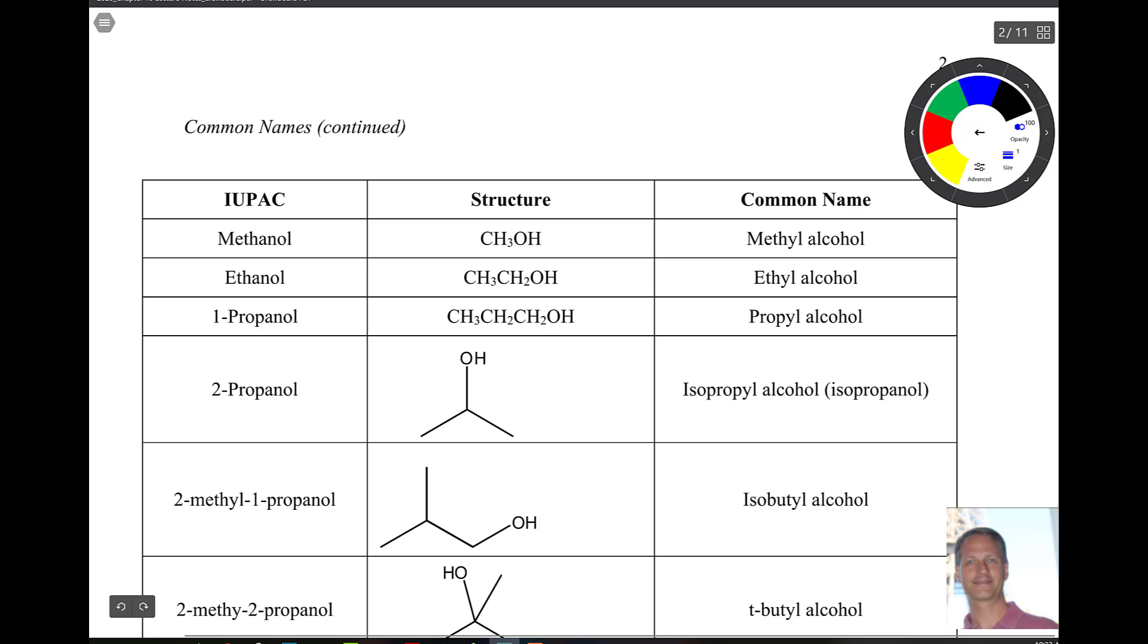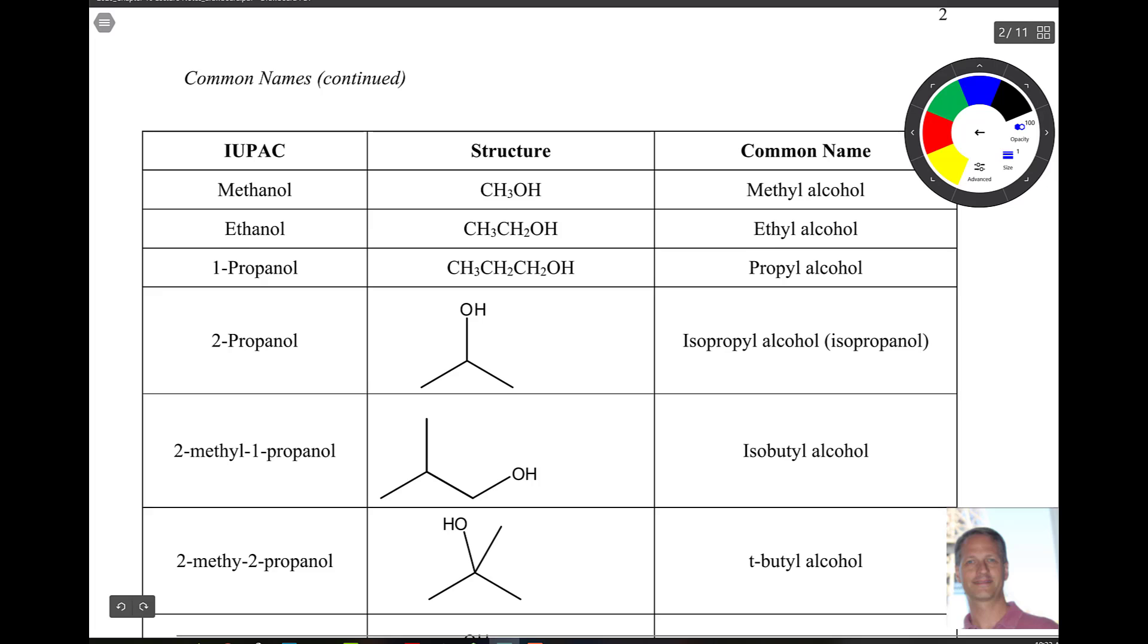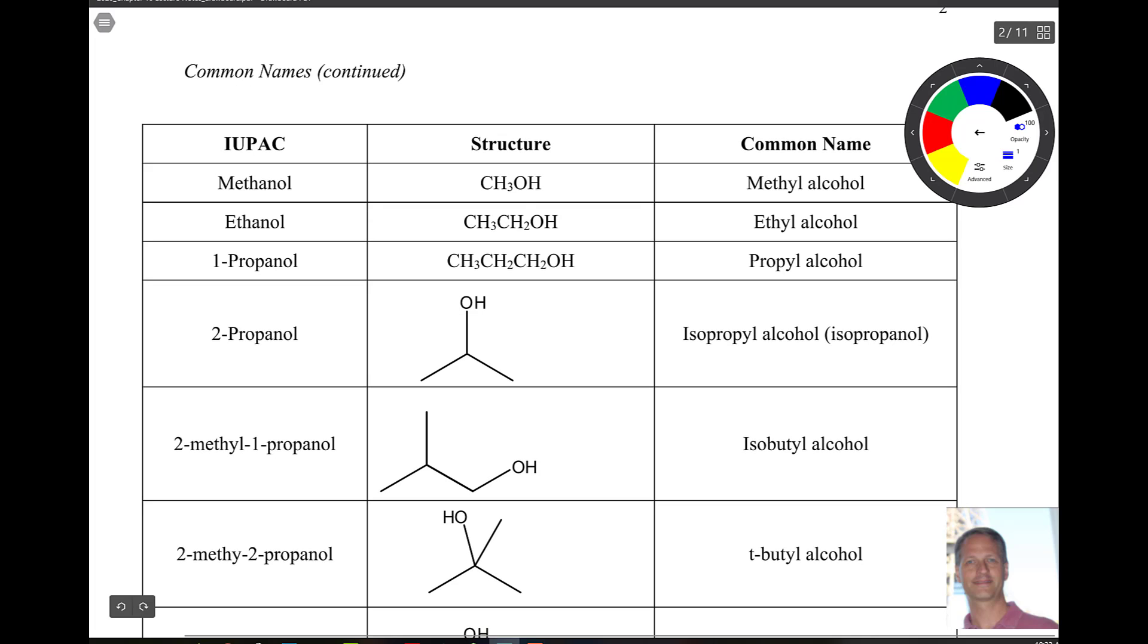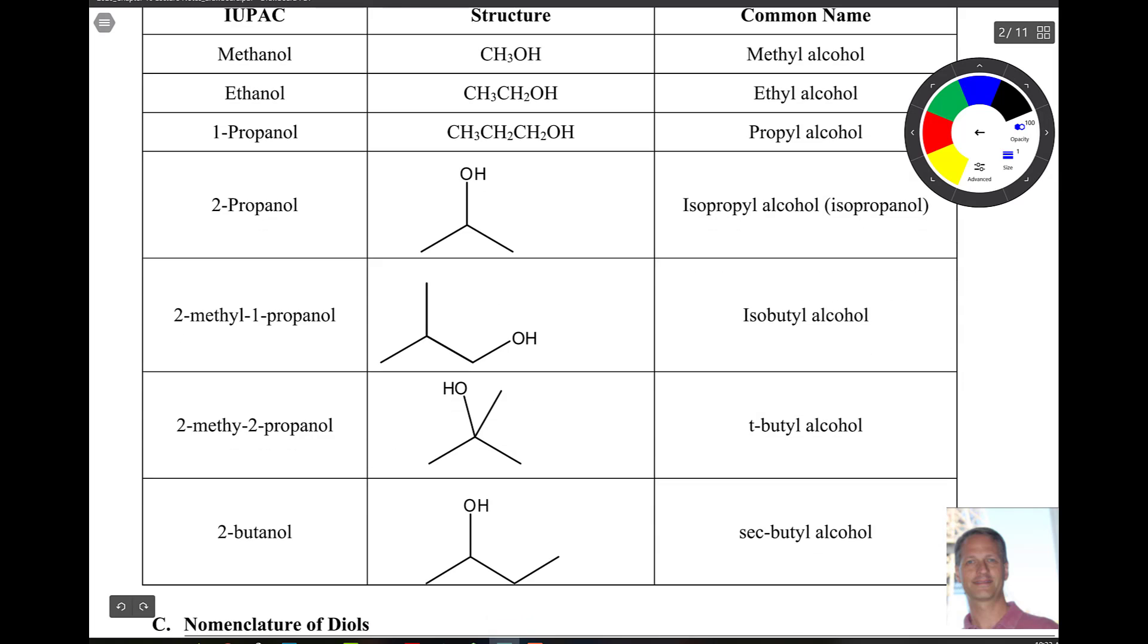So methanol is the IUPAC, also known as methyl alcohol. Ethanol is also known as ethyl. One propanol known as propyl alcohol. Two propanol isopropyl alcohol. So this is rubbing alcohol. Two methyl-1-propanol, isobutyl alcohol. Two methyl-2-propanol, tert-butyl. And two butanol, sec-butyl alcohol. So we've seen, I think we've seen isopropyl and tert-butyl before, but not isobutyl or sec-butyl. So those are things you just ought to essentially commit to memory as you proceed through this chapter.